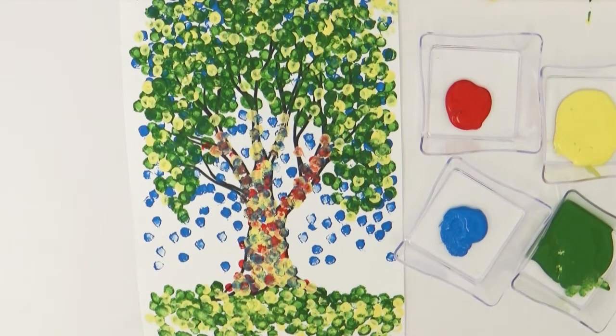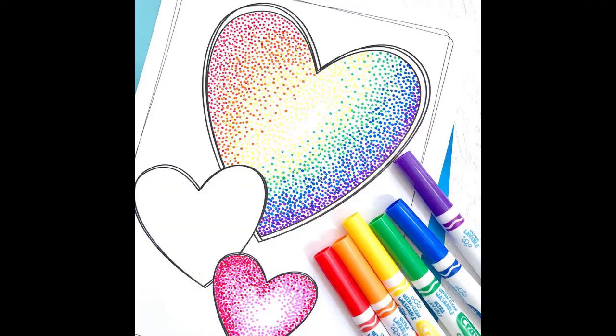After you finish your tree try out some different images. Take a coloring book page and try to use pointillism to color that. Now if you run out of paint or maybe you didn't get an art kit you can always use your markers and just use tiny little dots to create your pointillism.